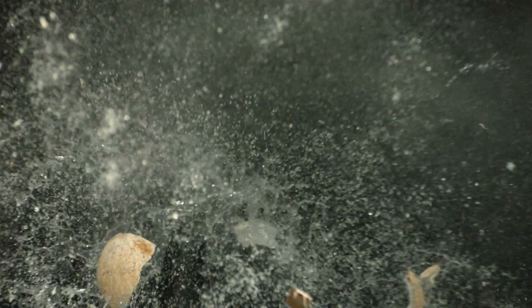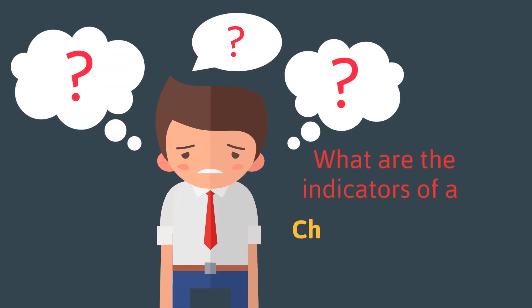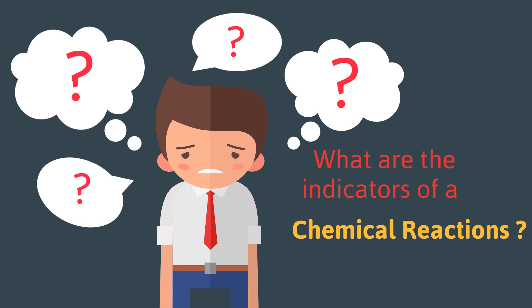Some chemical reactions, like this one taking place right now, are obvious. Others are not. So what are the indicators of a chemical reaction? There are at least five.